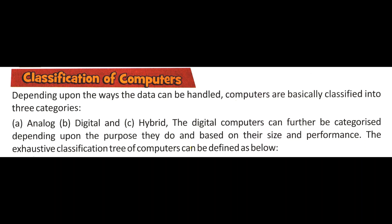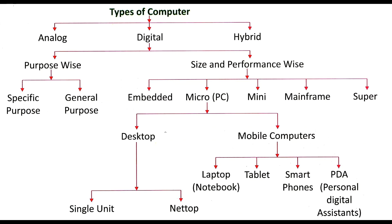Further, depending on the size and performance of the computer, they are also categorized. As we see in the figure, computers are classified into analog, digital, and hybrid. On the basis of purpose, computers are also classified as special purpose and general purpose. Hybrid computers are further classified based on size and performance into embedded, micro — known as PC — mini, mainframe, and super. Micro computers are classified into two groups: desktop and mobile computers. Desktop computers are further classified into single unit and laptop, while mobile computers are classified into laptop or notebook, tablet, smartphone, and PDA — Personal Digital Assistant.